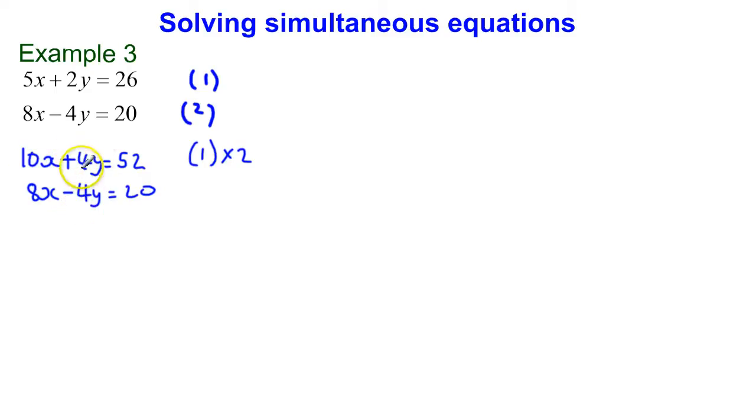Now, in order to do the elimination this time, rather than subtracting one equation from the other, because one of them is plus 4y and the other one is take away 4y, I actually need to add these equations together, and we'll see why this happens.